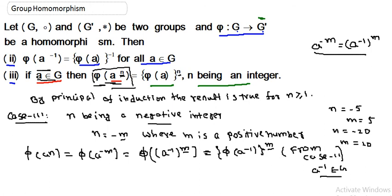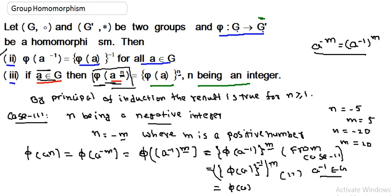Now using property 2 (result 2), phi(a⁻¹) equals phi(a) whole inverse, so phi(a⁻¹) to the power m equals phi(a) whole to the power minus 1, whole to the power m. Using the law of indices again, phi(a) whole to the power minus 1, raised to the m, equals phi(a) whole to the power minus m, which is phi(a) whole to the power n. So the result holds for negative integers as well.